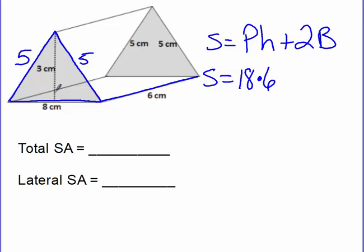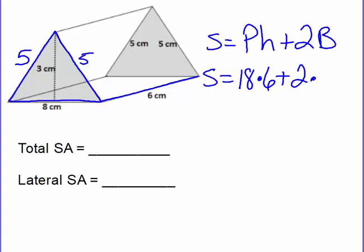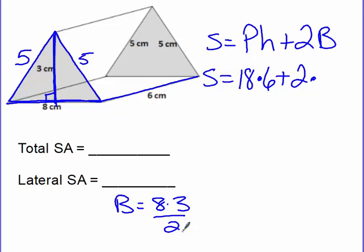So times 6, because that's the distance between the two triangles. It's not the 3, because the 3 is the height of the triangle, not the distance between the triangles. So plus 2 times — now we need to find our area of the base. The formula for the area of the base is base times height divided by 2. Our base of our triangle is 8, and our height is 3 because that's the part touched by the right angle. So capital B equals 8 times 3 divided by 2: that's 24 divided by 2, which gives us 12.